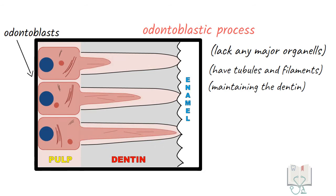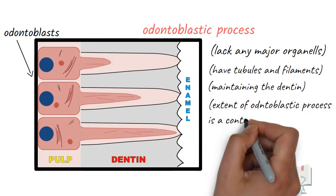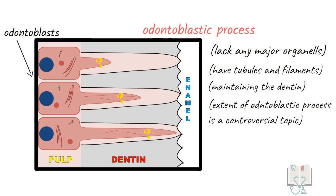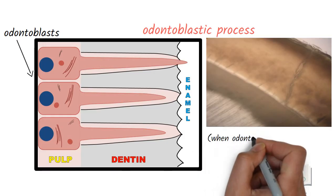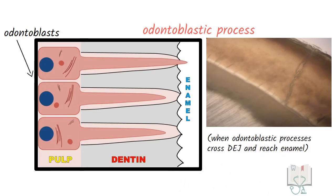The extent of odontoblastic processes present in the tubules is still a controversial topic though sometimes odontoblastic process may cross the dentino enamel junction and reach enamel where they are called as enamel spindles.